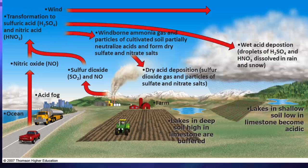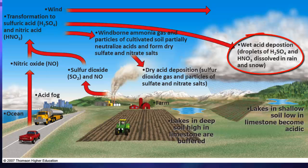As they're traveling, they can form dry deposits like sulfur dioxide gas and particles of sulfate and nitrate salts. If these particles combine with water vapor, they can form acids like sulfuric acid and nitric acid, which will then fall as acid rain or acid snow.